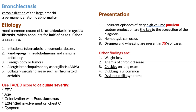Bronchiectasis is a chronic dilatation of the large bronchi. It is a permanent anatomical abnormality. The most common cause is cystic fibrosis, which accounts for half of the cases. Other causes are infections like TB, pneumonia, and abscesses.